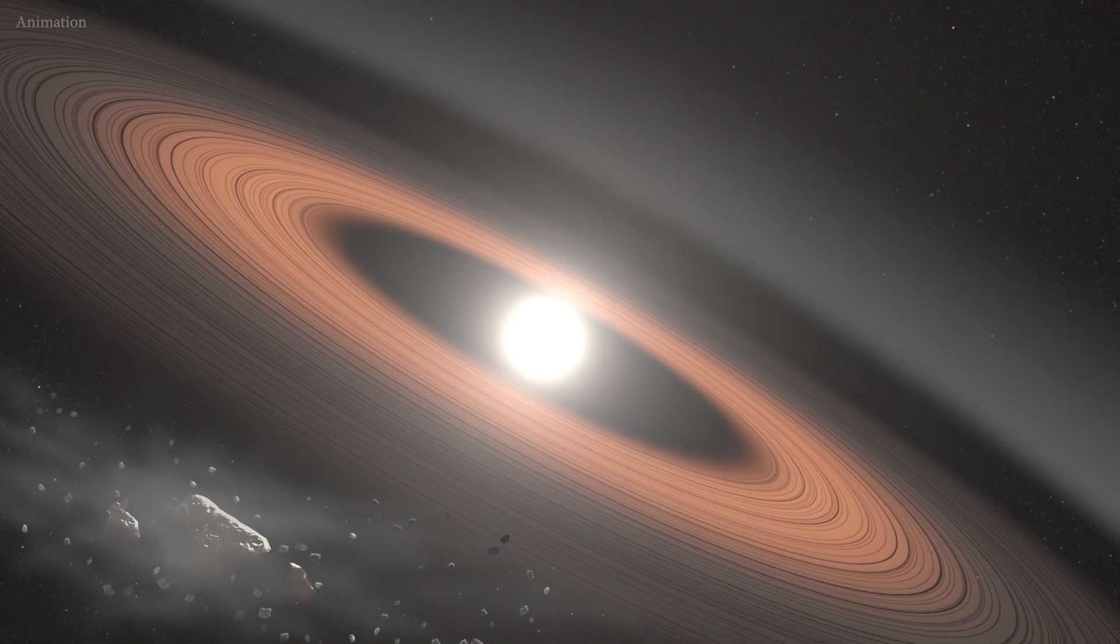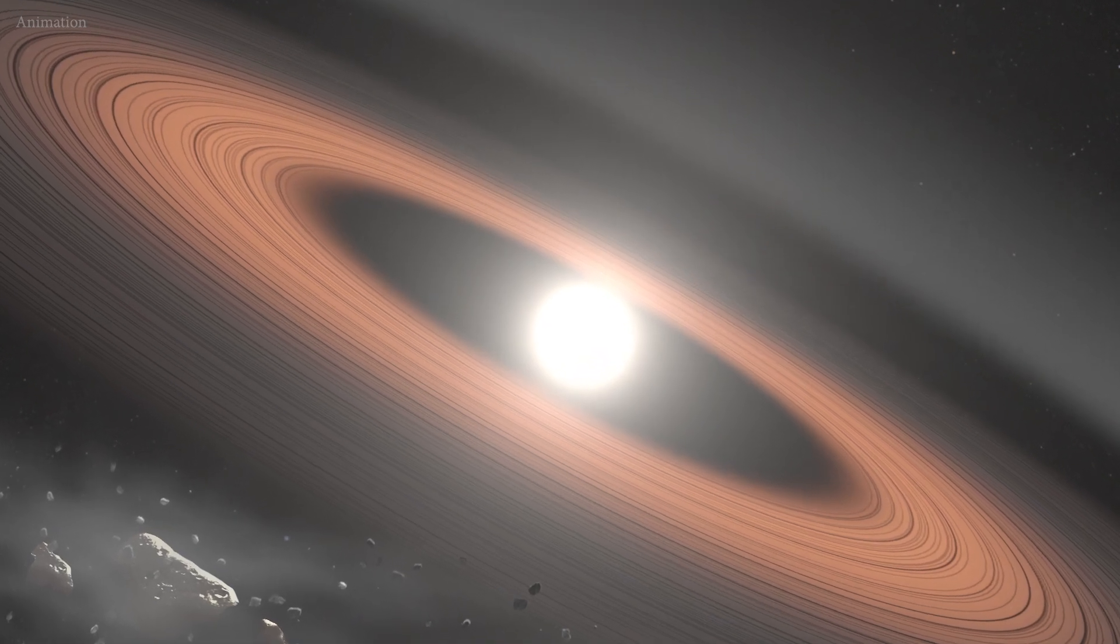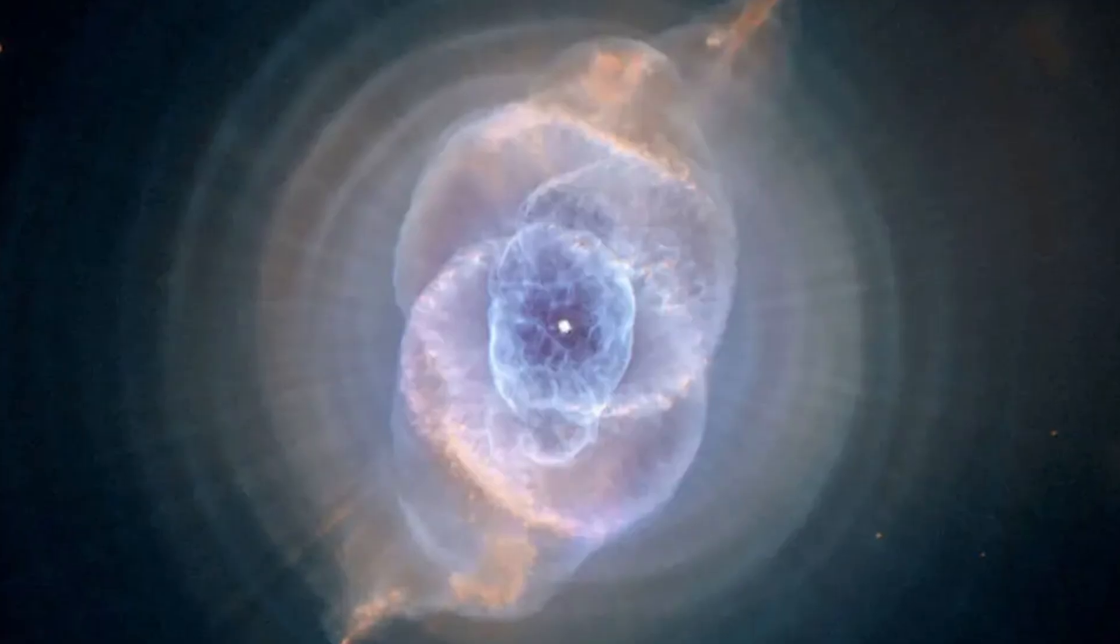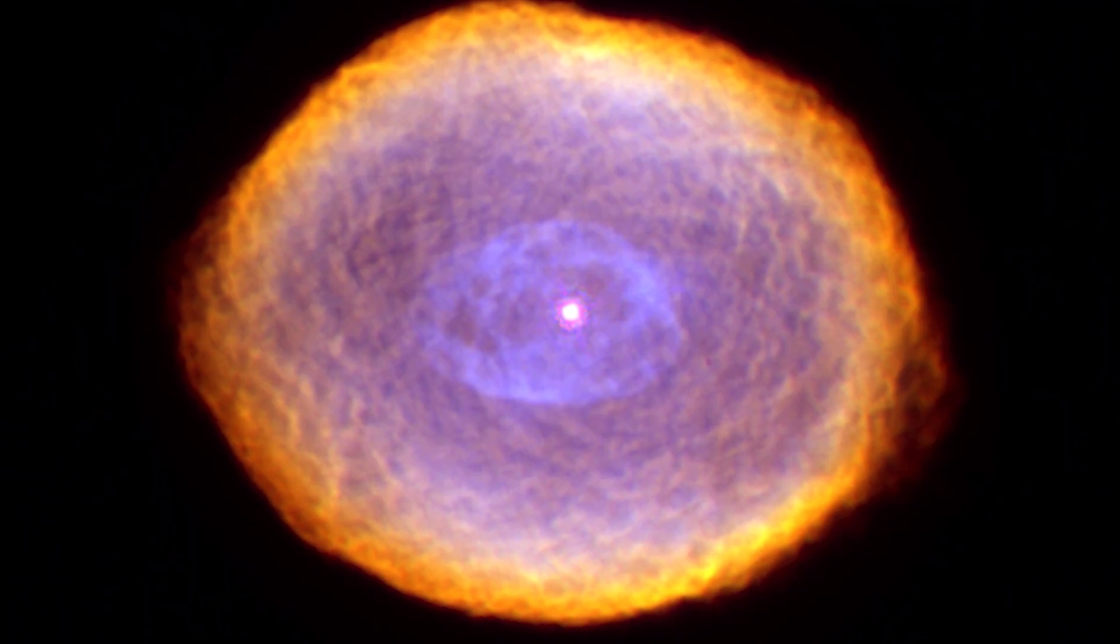A white dwarf is what stars like the Sun become after they exhaust their nuclear fuel. Near the end of its life, this type of star expels most of its outer material, creating a planetary nebula. Only the hot core of the star remains.